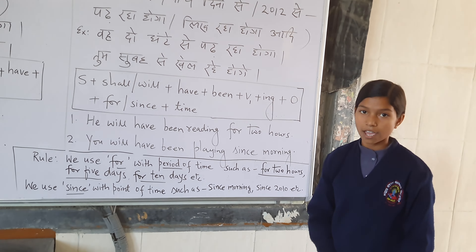The formula continues: have plus being plus verb ING plus object plus for/since plus time. Example: 'Woh do ghanton se padh raha hoga' — He will have been reading for two hours. 'Tum subah se khel rahe hoge' — You will have been playing since morning.